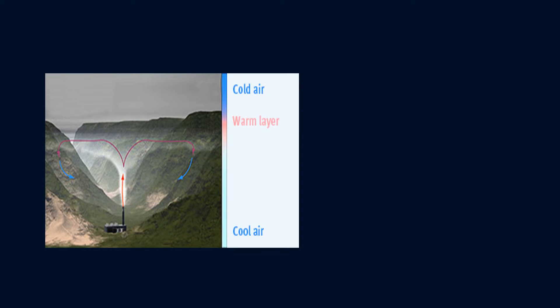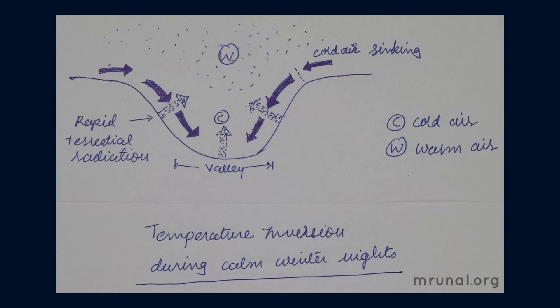A very interesting phenomenon about which we will study is called the inversion of temperature. We have studied that normally the temperature decreases with height at a rate of 1 degree centigrade for every 166 meters increase in height. However, in some areas and during certain times, the temperature increases with height in the atmosphere. This phenomenon of increase in temperature with increase in height is called the inversion of temperature. This happens in hollows and valleys on clear, calm nights when radiation has caused cooling and the cold air starts to sink down.